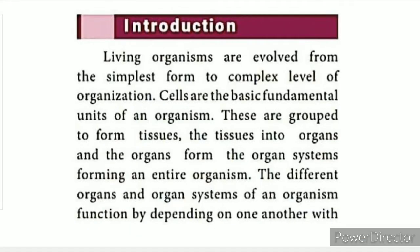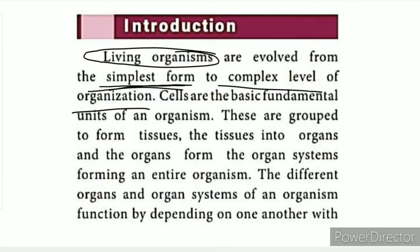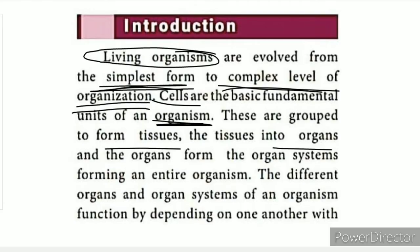Introduction: Living organisms are evolved from the simplest form to a complex level of organization. The simplest form includes amoeba and bacteria, while human beings represent a complex organism. All organisms are made of fundamental units called cells. Cells form tissues, tissues form organs, and organs perform particular functions. Organ systems are made up of multiple organs, and together they form the organism.